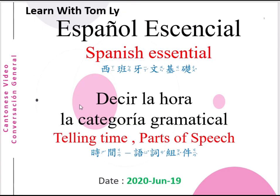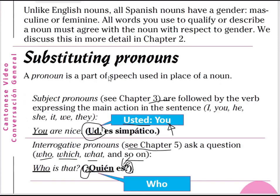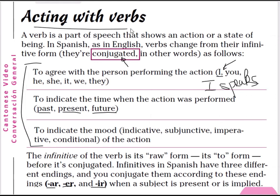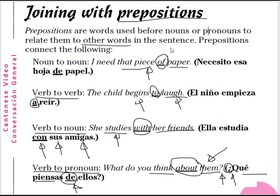In this last section of chapter 1, we have learned how to tell the time — decir la hora — and the parts of speech: how to use nouns, how to use pronouns, how to use verbs, adjectives, adverbs, and finally prepositions. That is all for chapter 1, and we will go to chapter 2 in the next section.